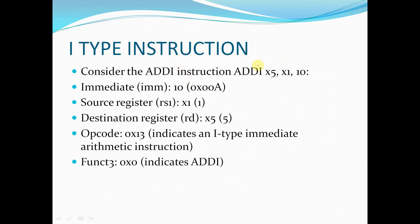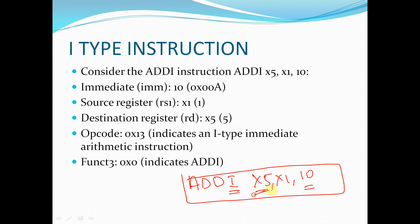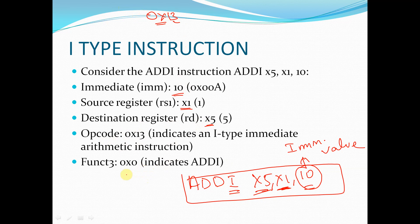Here is an example of an I-Type instruction: ADDI x5, x1, 10 — where 'I' represents that it is an immediate instruction. The immediate value is 10, source register is x1, and destination register is x5. The opcode for this I-Type instruction is hexadecimal 0x13, which indicates an I-Type instruction, and funct3 is 0, which indicates ADDI.